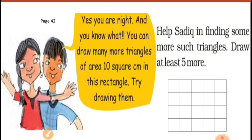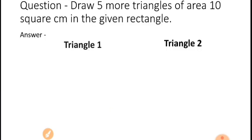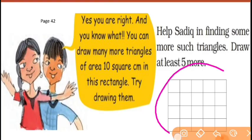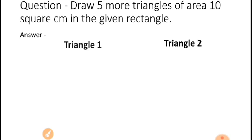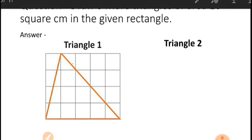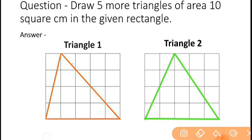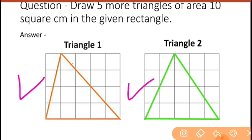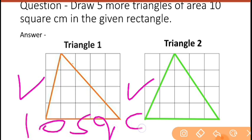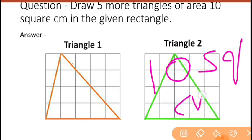The question is: draw 5 more triangles of area 10 square centimeters in the given rectangle. I have drawn them — you can see triangle 1 is here, and the second triangle is here. All are different shapes from each other, but the area is the same — 10 square centimeters.